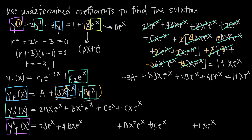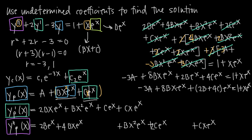We can factor out e^x to get −3a + 8bxe^x + (2b + 4c)e^x = 1 + xe^x. Now we equate coefficients: the constant gives −3a = 1; the coefficient of xe^x gives 8b = 1; and since there's no standalone e^x term on the right, we get 2b + 4c = 0.